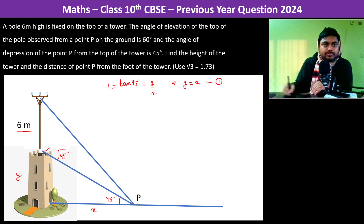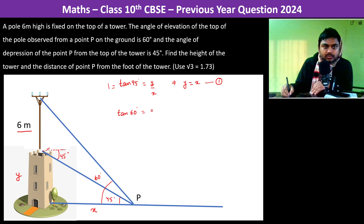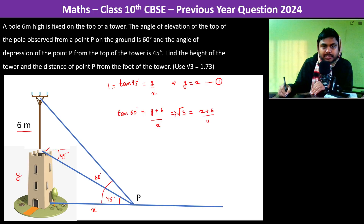Now for the top of the pole, this angle is going to be 60 degrees. Therefore we have tan 60° = (y + 6) / x. Since tan 60° = √3, this gives √3 = (x + 6) / x.